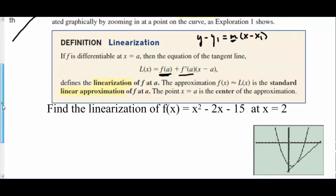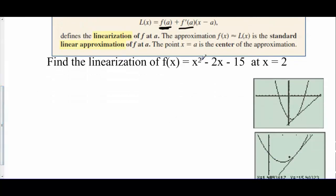So here's an example. Find the linearization of this parabola x² - 2x - 15 at x equals 2. So the center is 2. Now this line that we're going to find, the equation of this tangent line, it's a good approximation as long as we stay close to 2. If we get far away from 2, the y values are going to be way off.